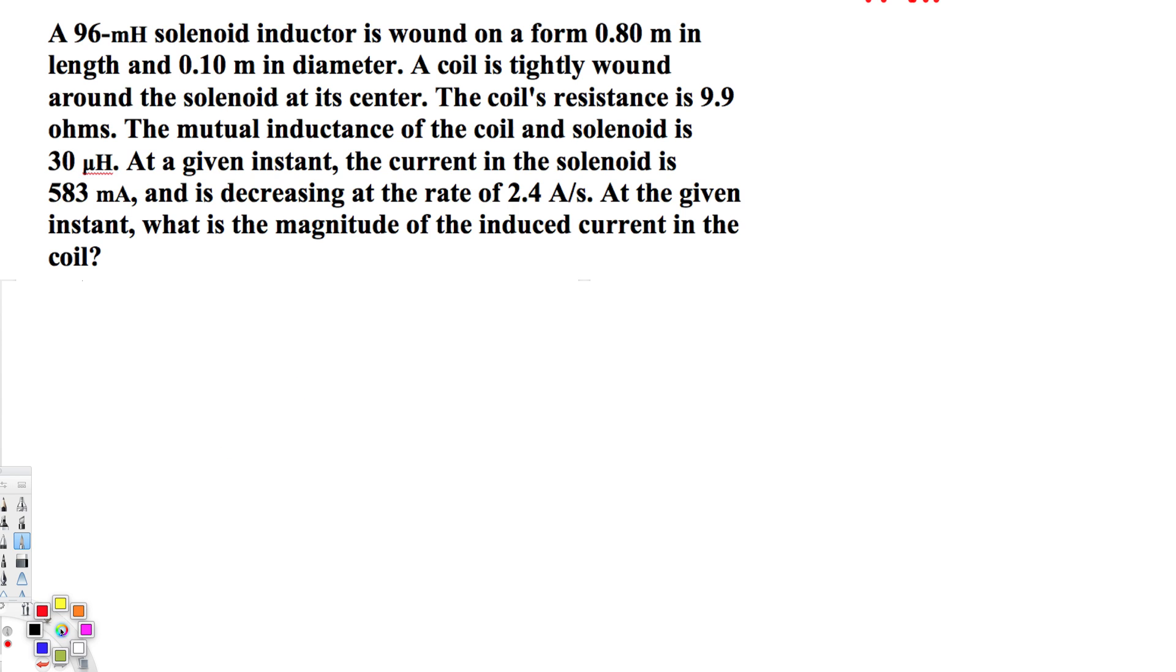The question is asking us to find the induced current. We know that induced current is equal to emf divided by the resistance. Let's look at the given information. We have the resistance but we don't have the emf. To find the emf induced in the solenoid we have to use this equation: